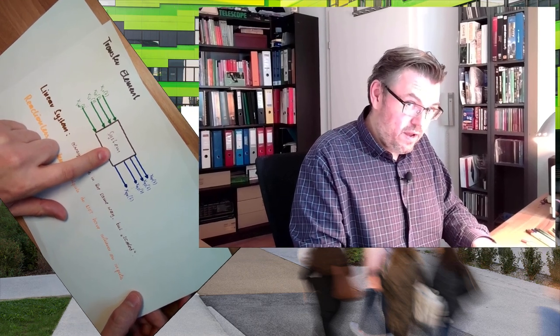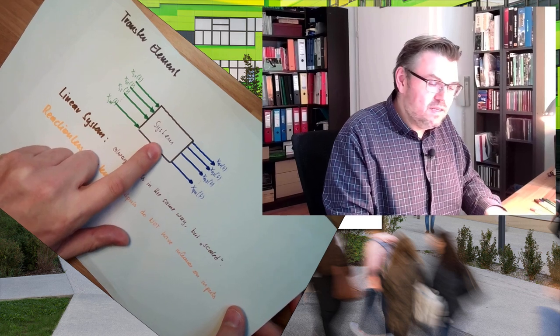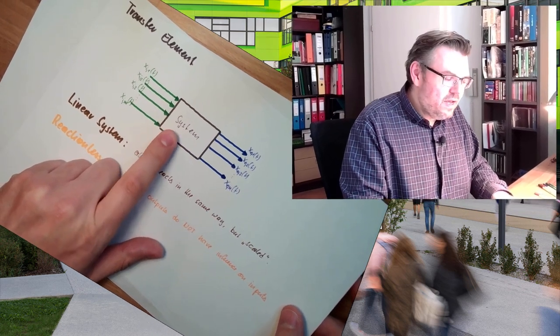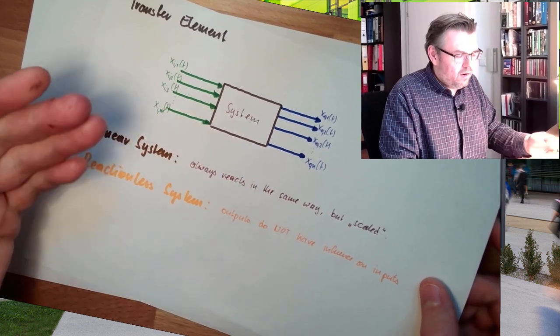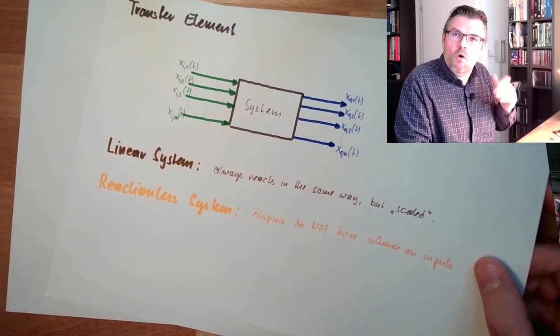Like last time, we had these transfer elements and we said there is a system, there are certain inputs, there are certain outputs, we have some restrictions and so on. Now we want to describe the system in a mathematical way — this is our goal today. We want to make this a little bit easier for us, so we restrict the number of inputs and the number of outputs to one. So we are transferring one input to one output.